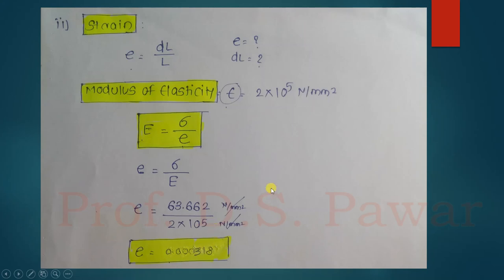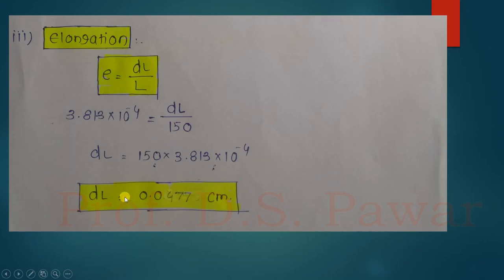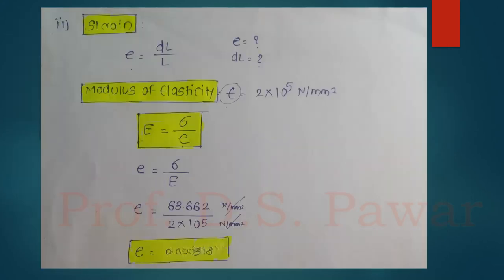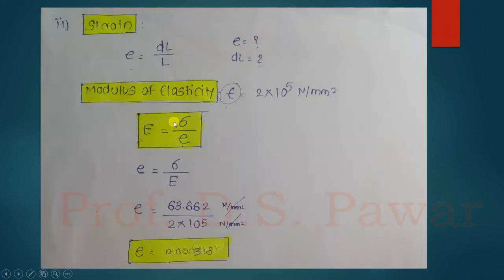After obtaining the strain value, I calculate the elongation. Using the strain formula again — strain = change in length / original length — I now know the strain (0.00318) and the total length (150 cm). Rearranging, change in length = strain × original length = 0.00318 × 150 = 0.477 cm. So the elongation is 0.477 cm. In summary, if you know the modulus of elasticity, the applied force, and the length and diameter of the bar, you can calculate the stress, strain, and elongation of the material.